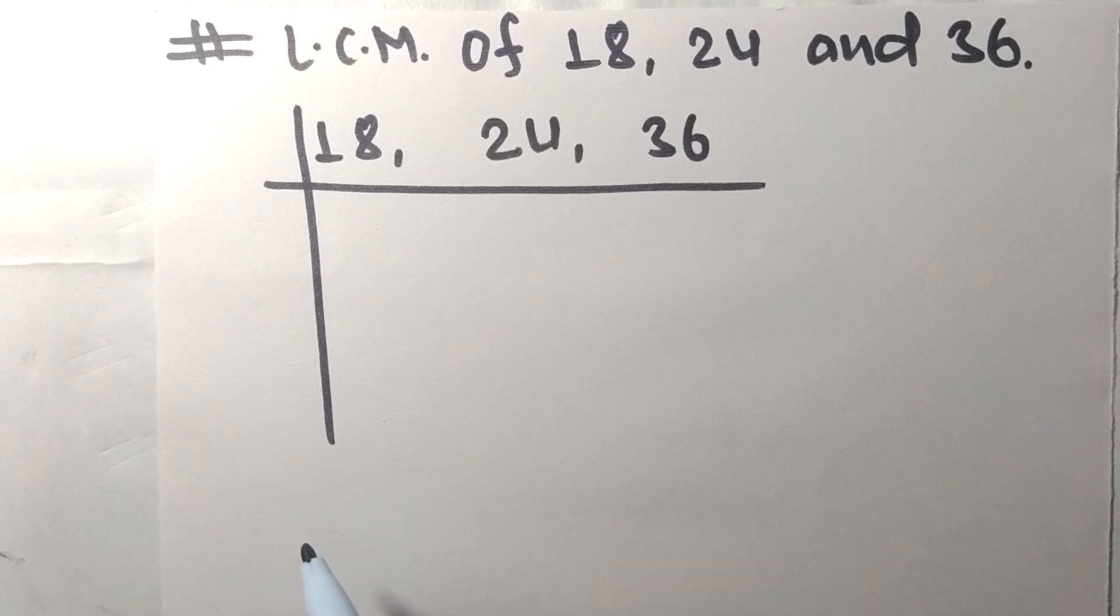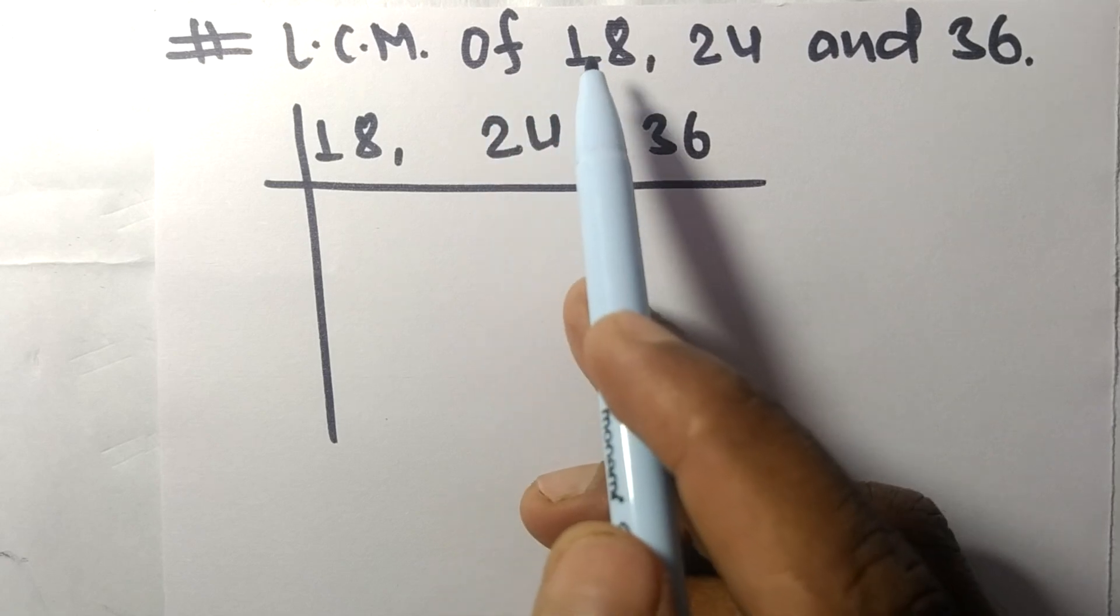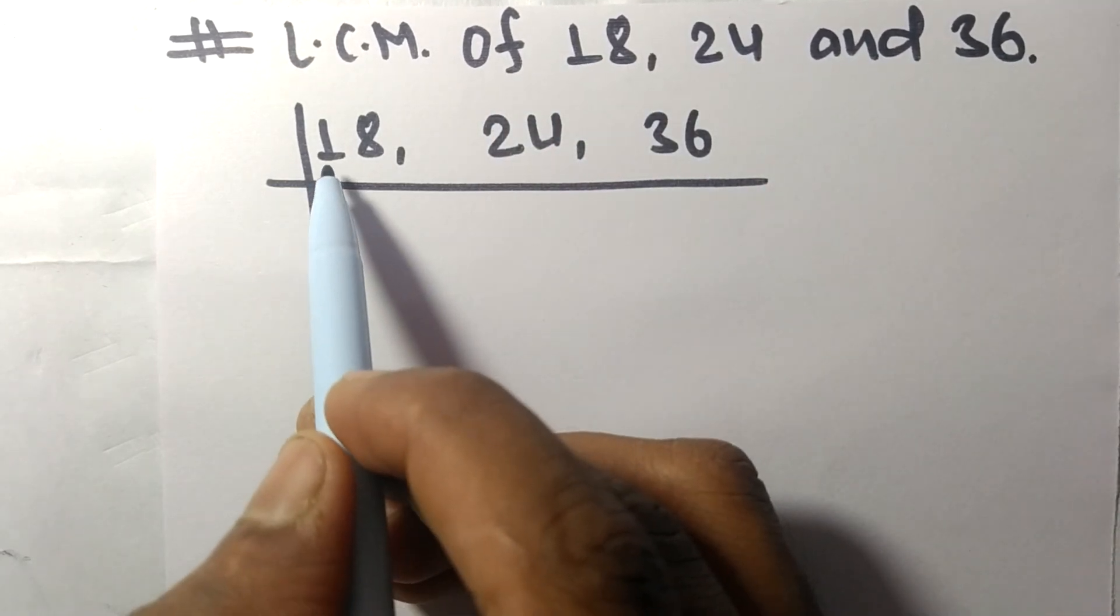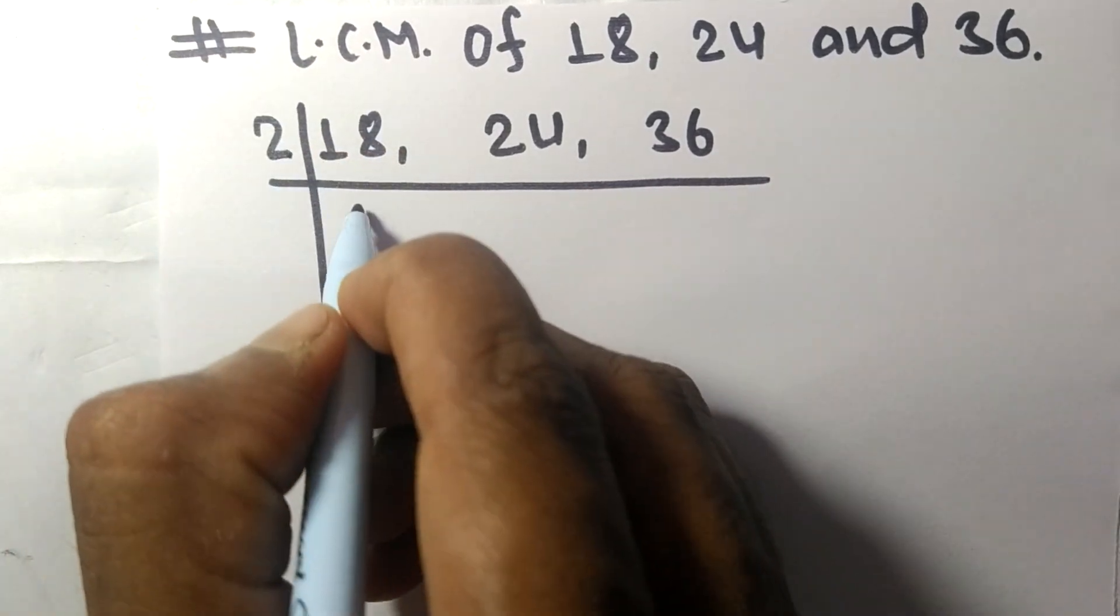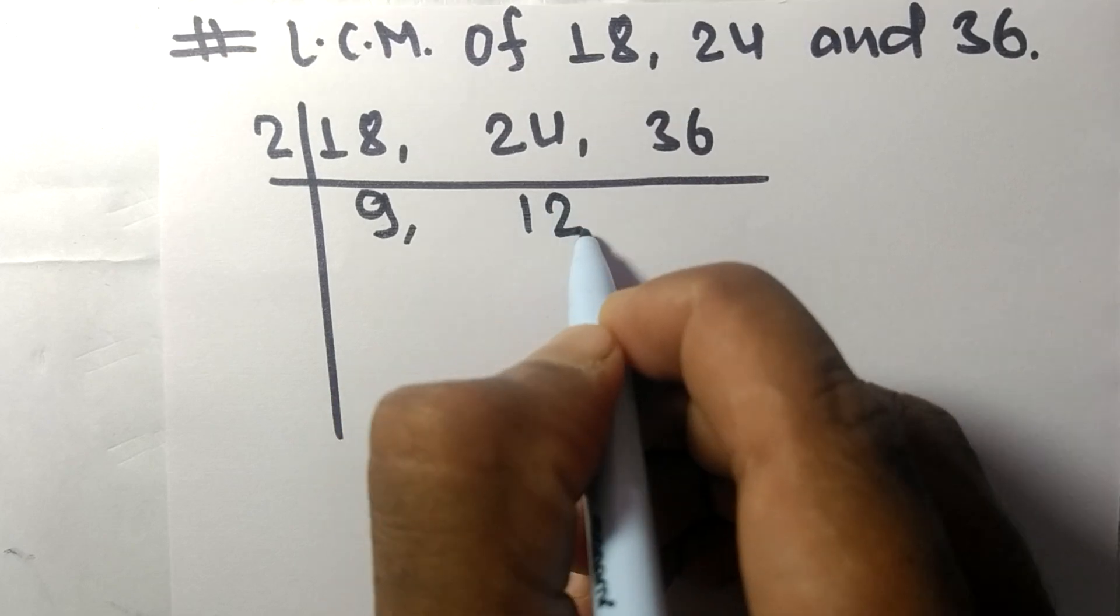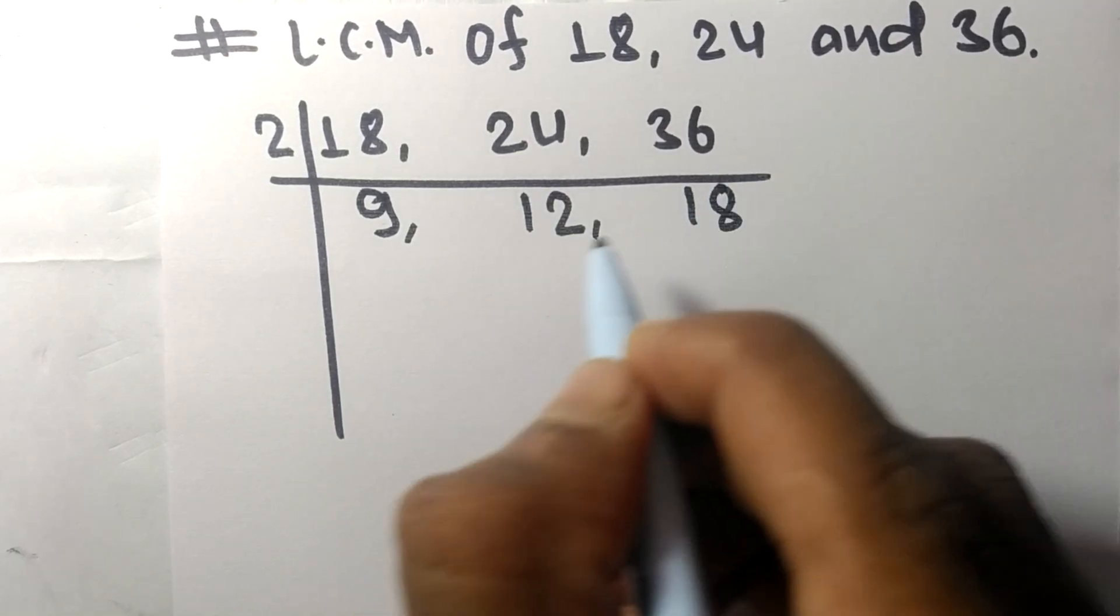Today in this video we shall learn to find the LCM of 18, 24, and 36. These numbers are all divisible by 2. 2 times 9 means 18, 2 times 12 means 24, 2 times 18 means 36.